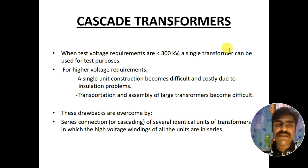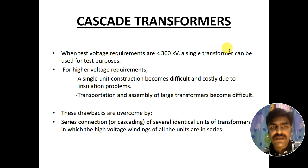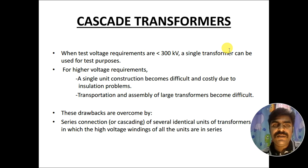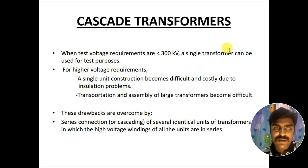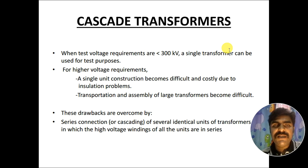But if the testing requirement is more than 300 kV, as we have in EHV or UHV lines, a single transformer will not be sufficient. The reason is that single unit construction becomes difficult and its cost is also high. Another issue is the insulation problem — designing a transformer for more than 300 kV creates serious insulation challenges. Additionally, transportation and assembly of such large transformers is also difficult.